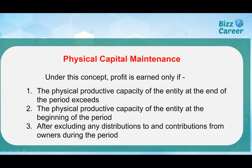Under physical capital maintenance, profit is earned only if the physical productive capacity of the entity at the end of the period exceeds the physical productive capacity at the beginning of the period, after excluding distributions to and contributions from owners.